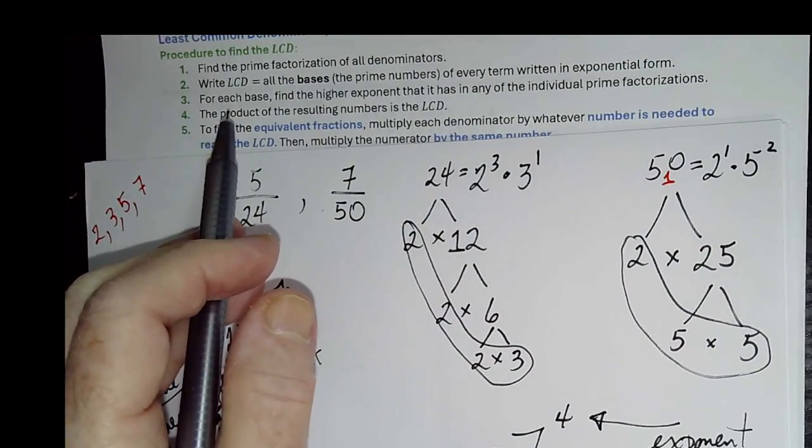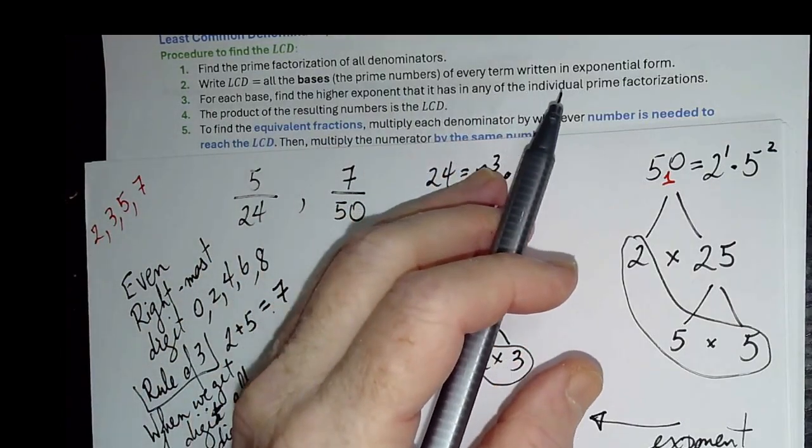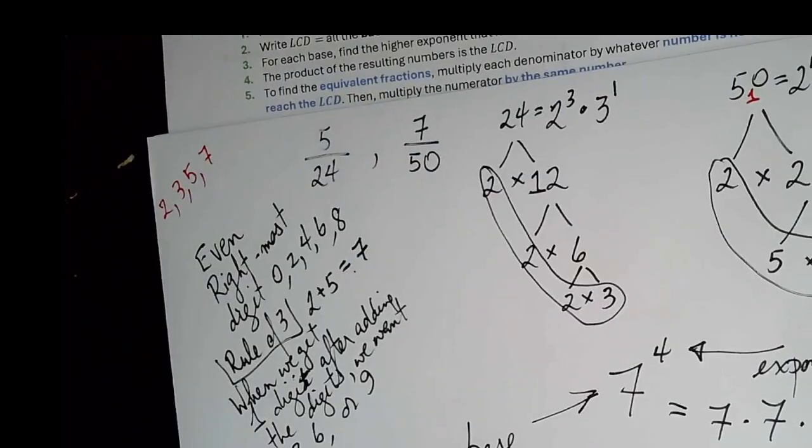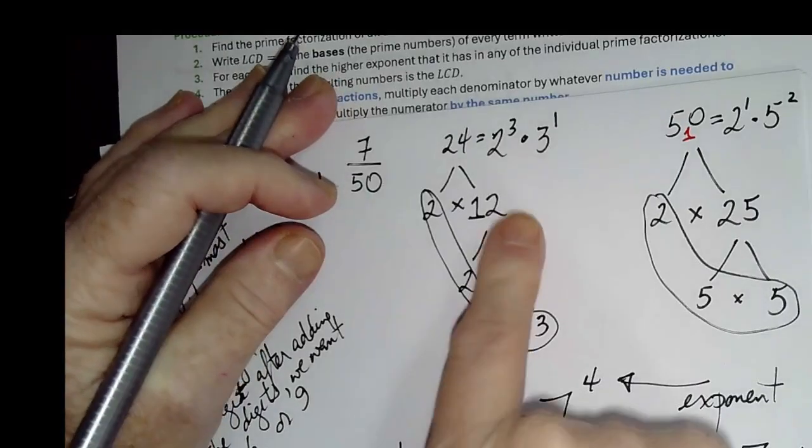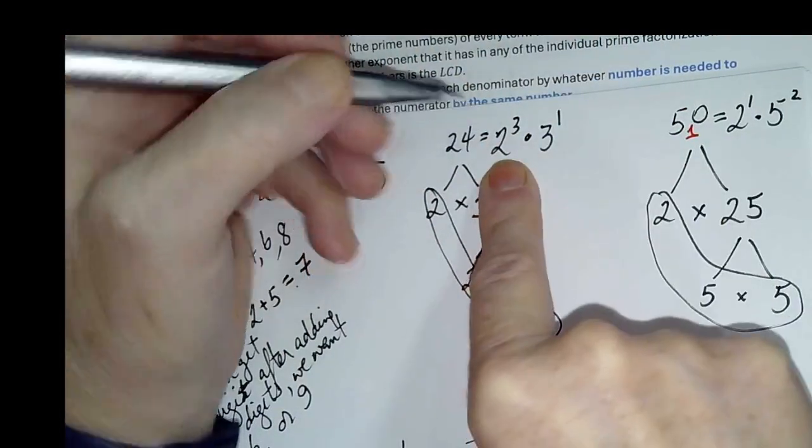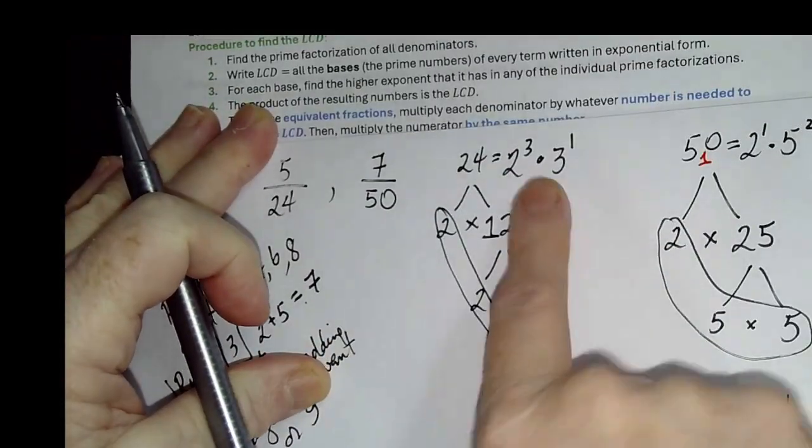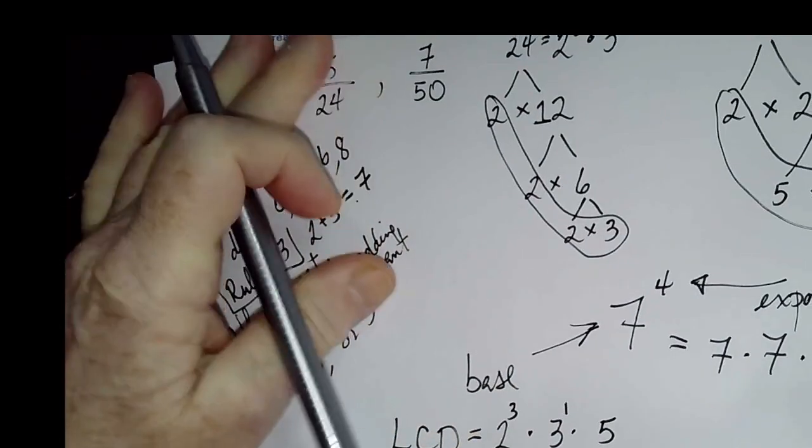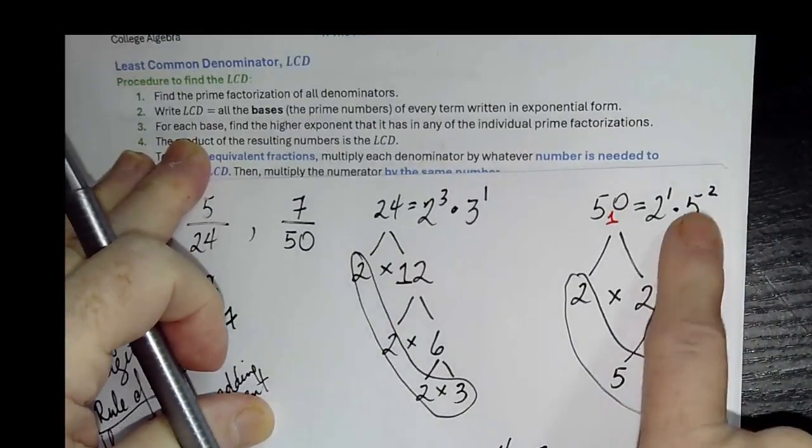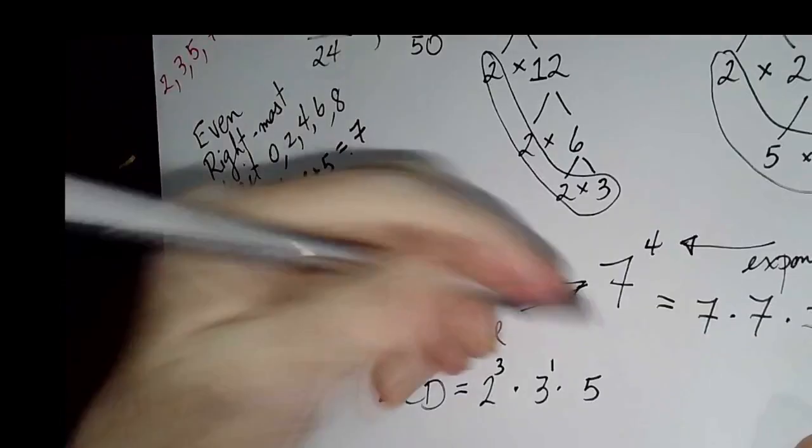For each base, this is step 3, for each base, find the higher exponent that it has in any individual prime factorization. Here's 2. There are 3 2s in 24, 1 2 in 50. So I'm going to choose the 3, it's the higher number. We have 1 3 in 24, no 3s in 50. So we're going to have 1 3. We have 2 5s in 50 and no 5s in 24. So we'll have 2 5s.